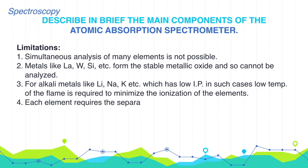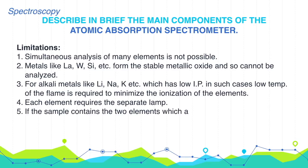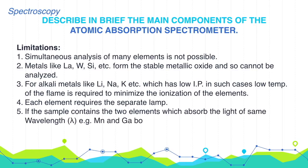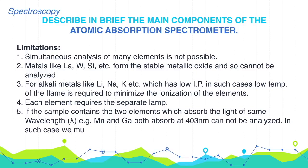4. Each element requires a separate lamp. 5. If the sample contains two elements that absorb light of the same wavelength — for example, manganese and gallium both absorb at 403 nanometers — they cannot be analyzed together. In such cases, the interfering element must be removed.